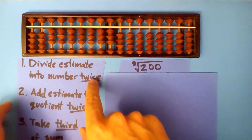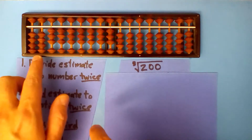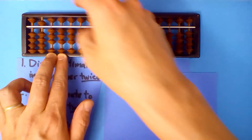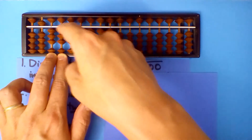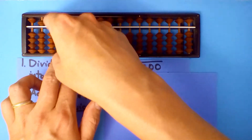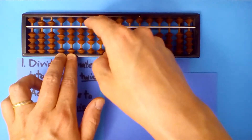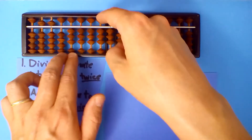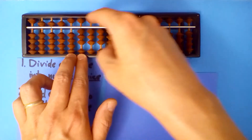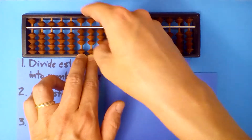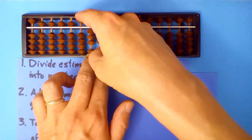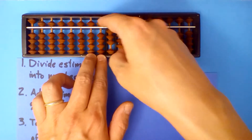Now we need to do this twice, so let's divide 6 into this number. 6 into 33 — 5 times. 5 times 6 is 30. 6 into 33 — 5 times, 5 times 6 is 30. Again, 5 times 6 is 30, and this keeps going.